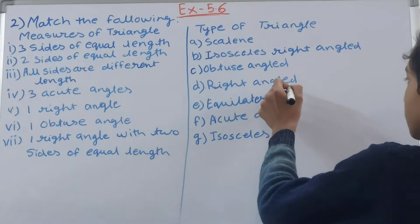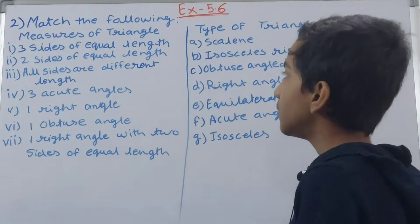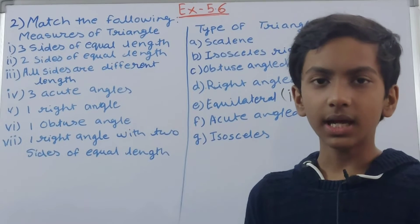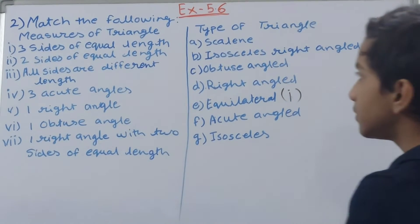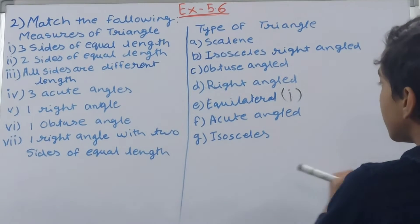Then, two sides of equal length. Now when there are two sides equal out of the three sides, that is an isosceles triangle. So here we have isosceles right angle and isosceles. Which one will you select? Isosceles, because isosceles right angle is something different.